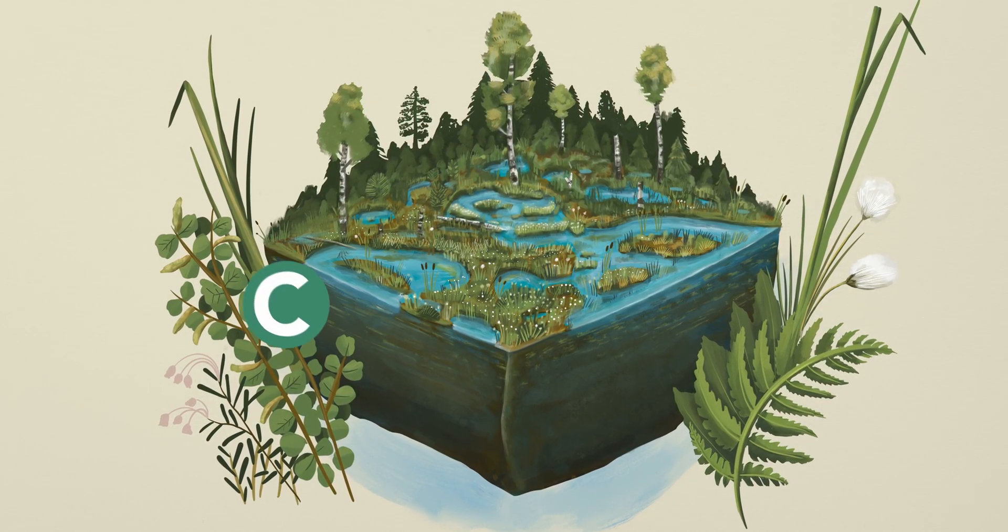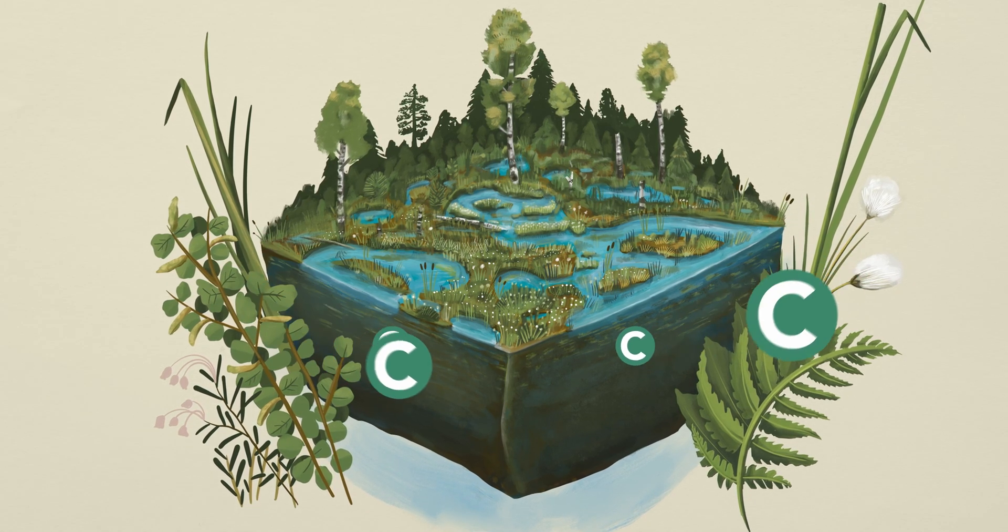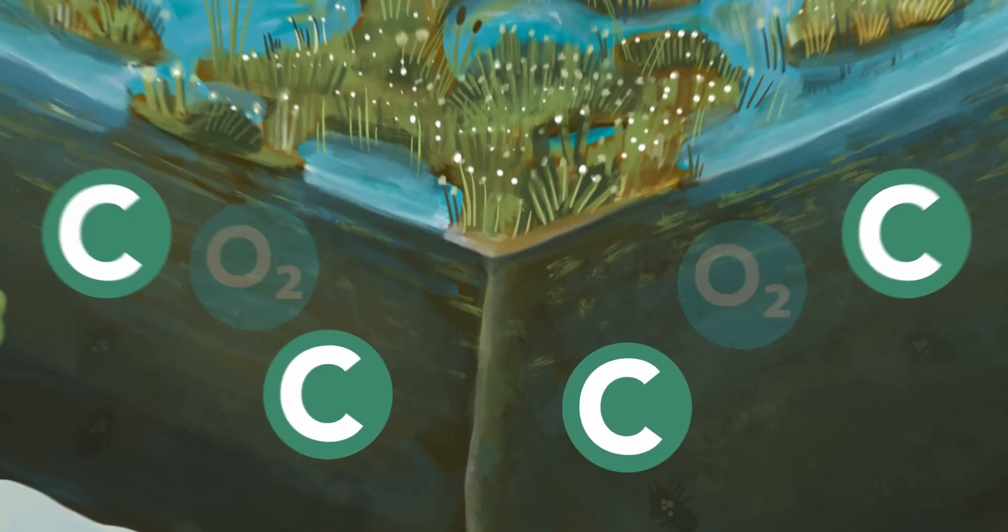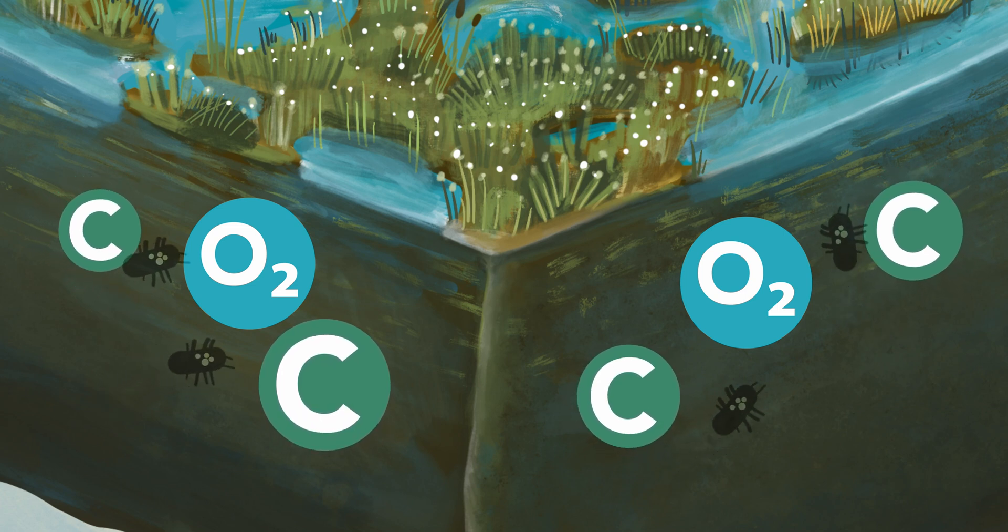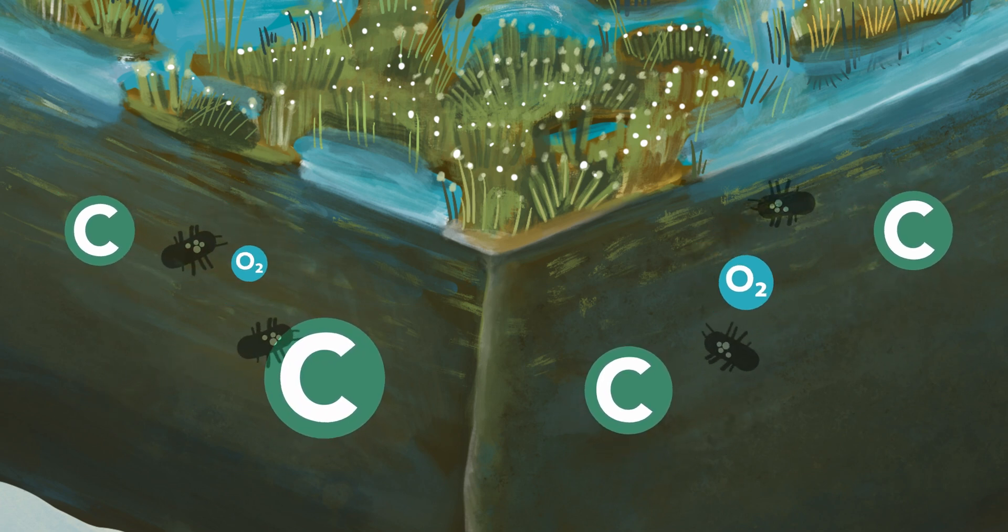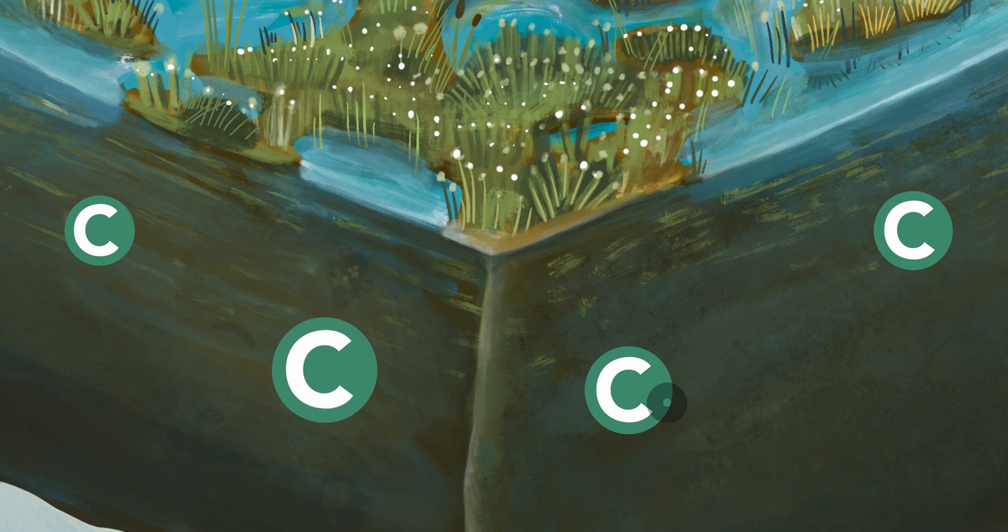After plants die, part of the dead plant material is conserved under waterlogged conditions. In presence of oxygen, organic matter is rapidly digested by microbes. Under waterlogged conditions, however, the available oxygen is quickly used up and digestion slows down.